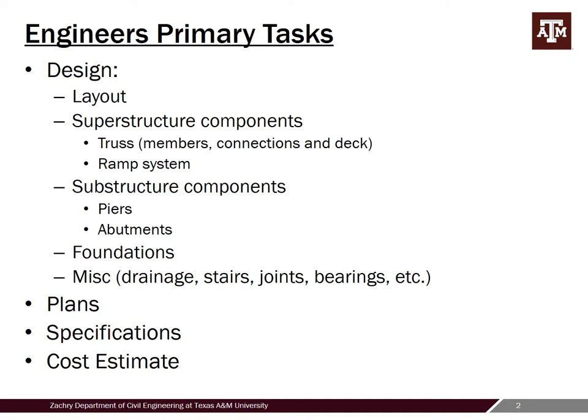All the superstructure components need to be designed. The main ones for this particular project were the truss itself — the members, the connections, the deck system — as well as the ramp system, which was actually the longer portion of this facility. With all that information you can design the substructures, loading into the piers, which needed to be designed, as well as the abutments. The foundations were designed in collaboration with a geotechnical engineering firm. Miscellaneous elements included drainage, stairs, joints, bearings, and so on.